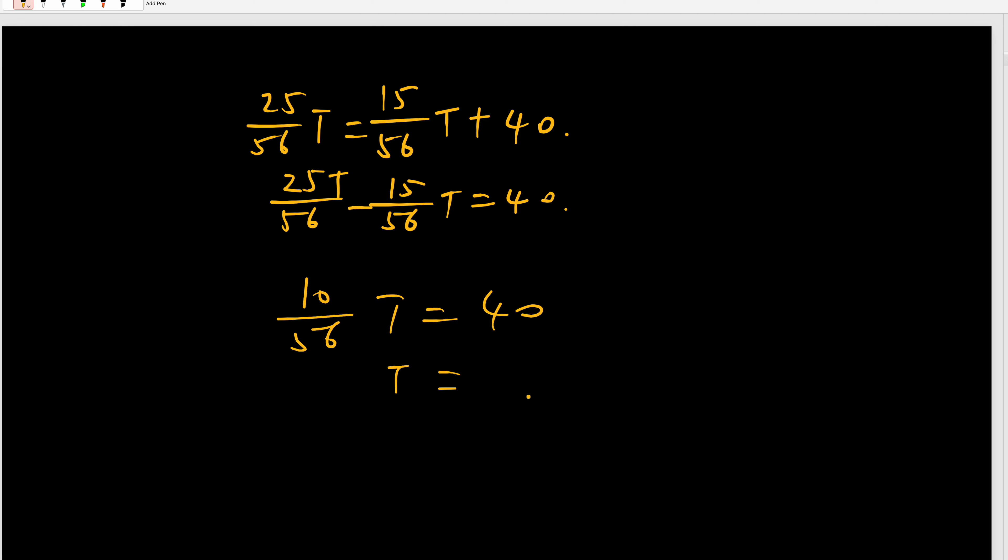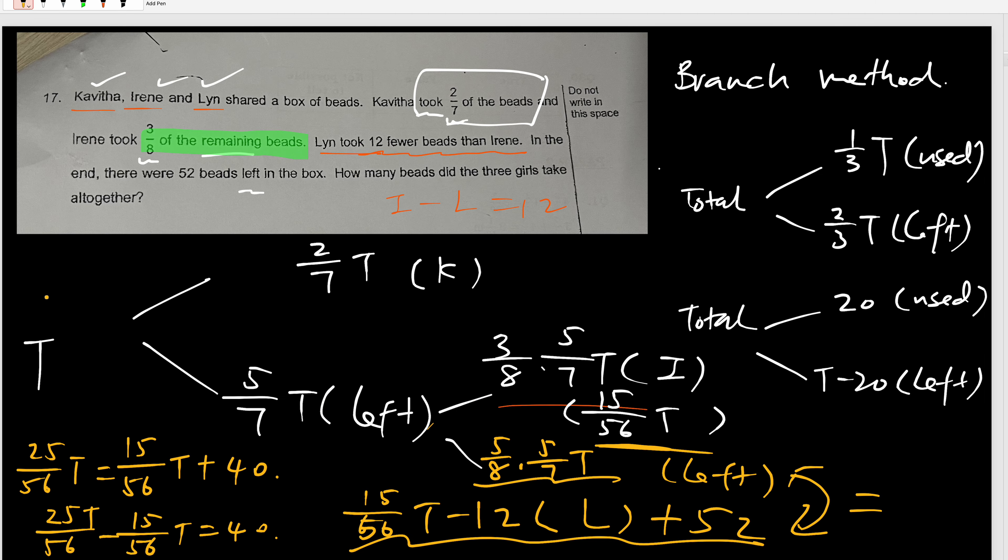So T is equal to 224. So that's the total. So you go back to, this is 224, right? So what they ask. How many bits did the 3 girls take all together? 224, but you still have the left 52, right? So therefore, you need to take 224 minus the 52. So the answer should be 172. Because they ask for how many bits did the 3 girls take, so they take 172. Simple? Do you get the question? Do you get this? Correct?